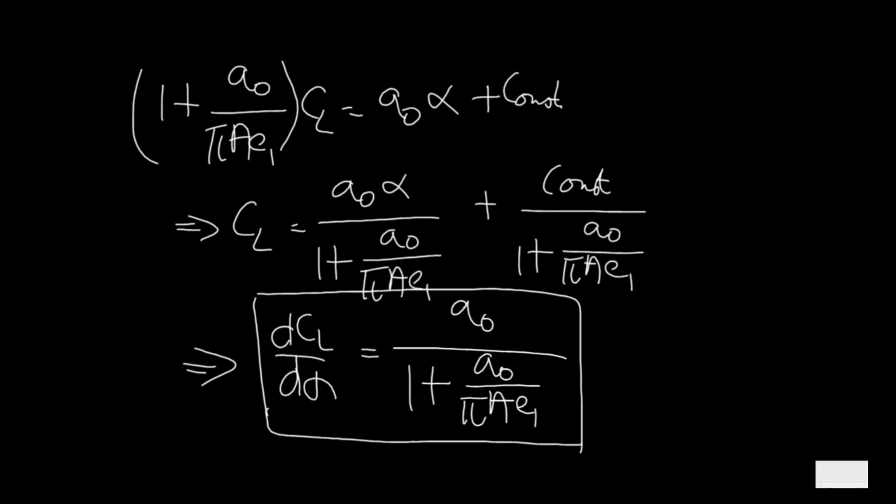Now if this A here is infinitely big, then of course this goes to 0 and we have a0, which is the two-dimensional value. For small thin profiles we have dCL/dalpha is 2 pi.